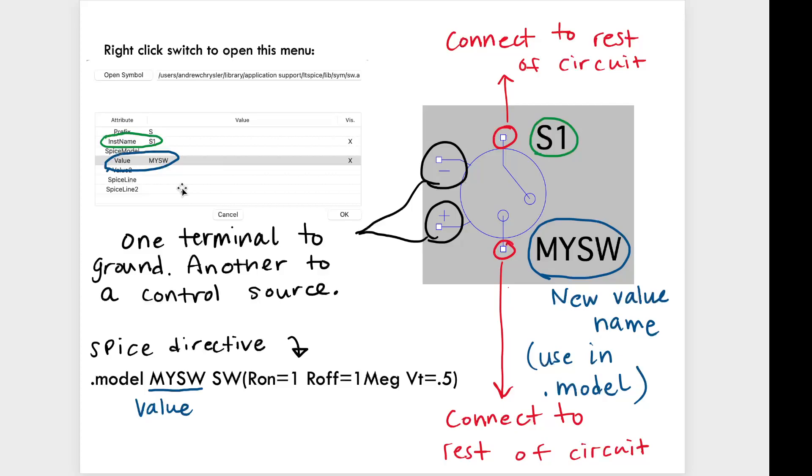I'm going to add this to the schematic, right? That's with F2. You can see it has this instance name here. And then you also need to change the value name to something specific for that switch. You can get to that menu and changing those by right-clicking somewhere on that switch itself. And then you can access this menu right here.